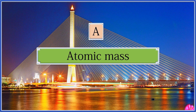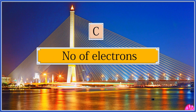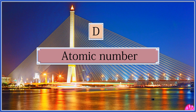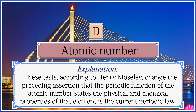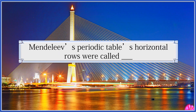Which is the periodic function of an element's behavior: atomic mass, element behavior, number of electrons, or atomic number? The answer is atomic number. According to Henry Moseley, this changed the preceding assertion — the periodic function of the atomic number states the physical and chemical properties of the element, which is the current periodic law.